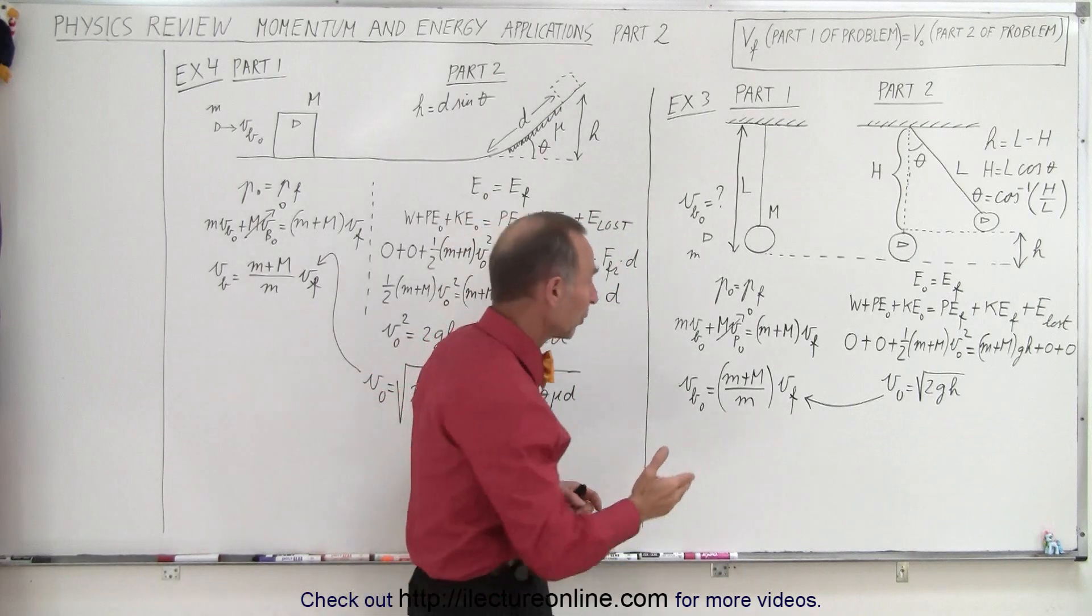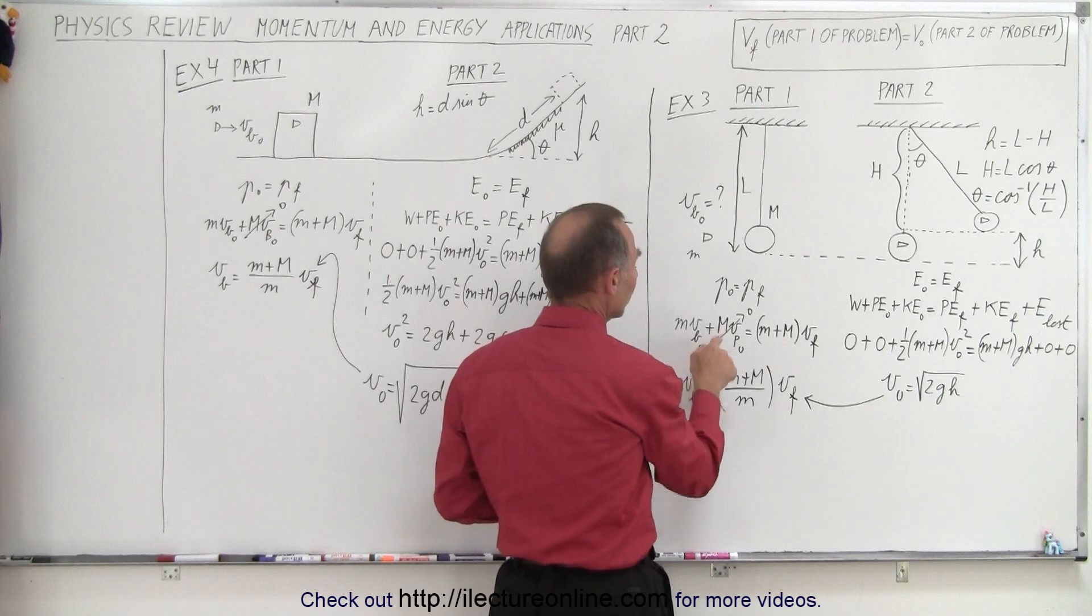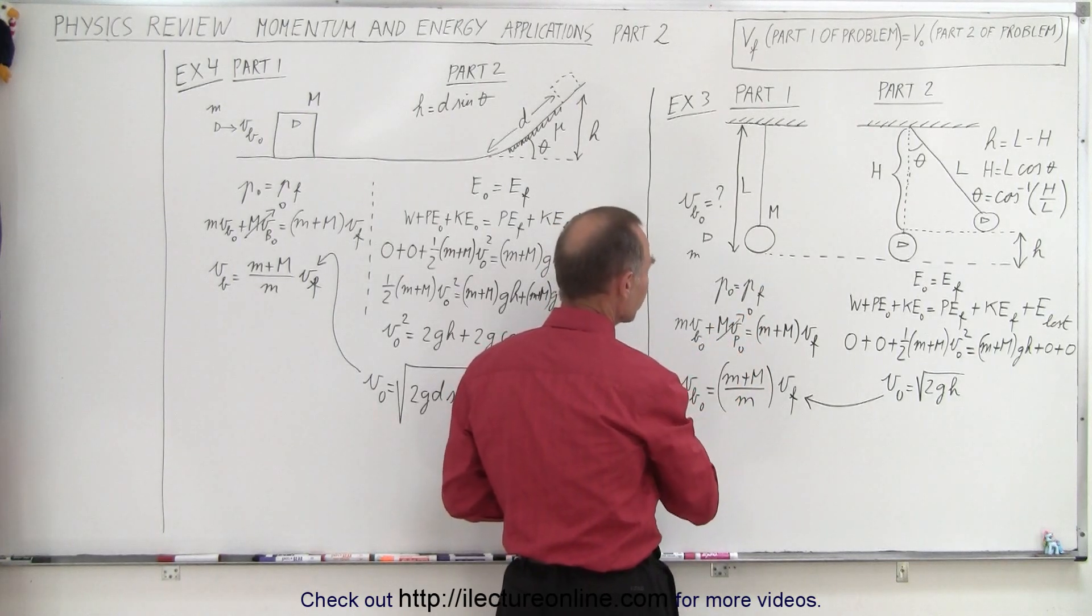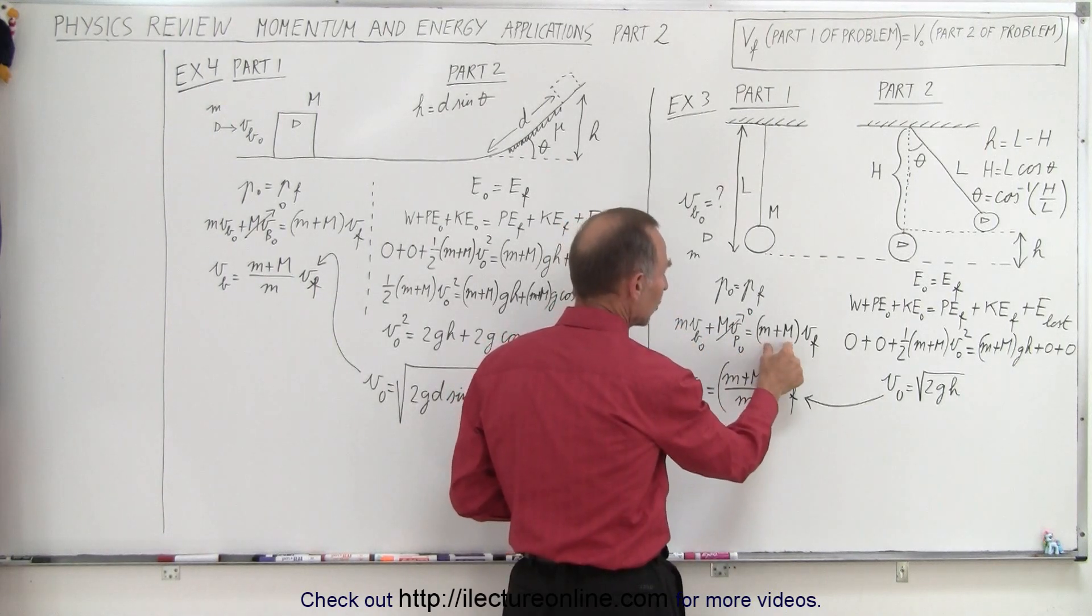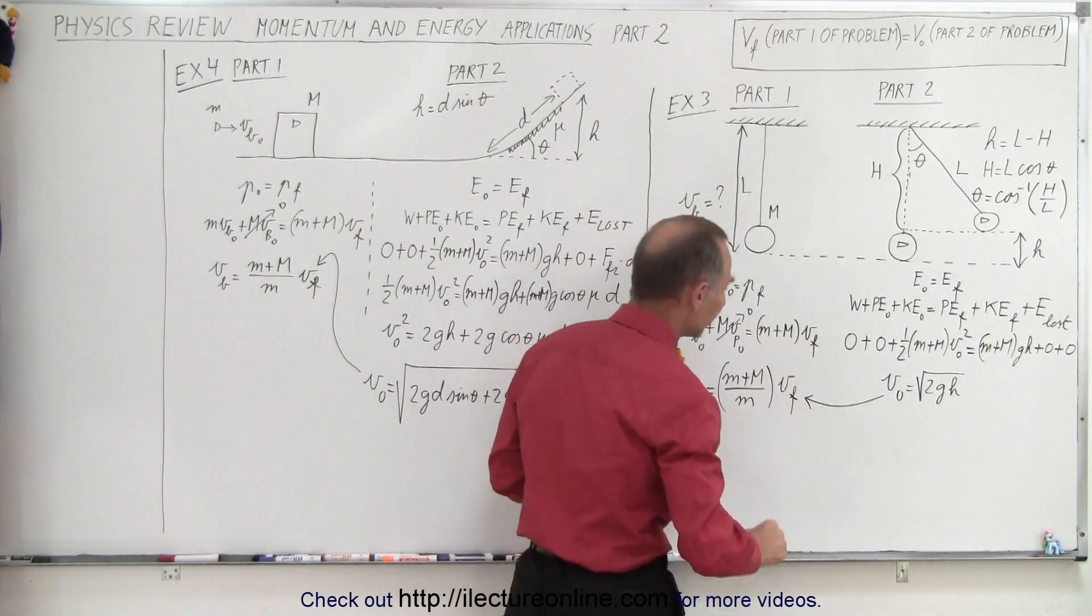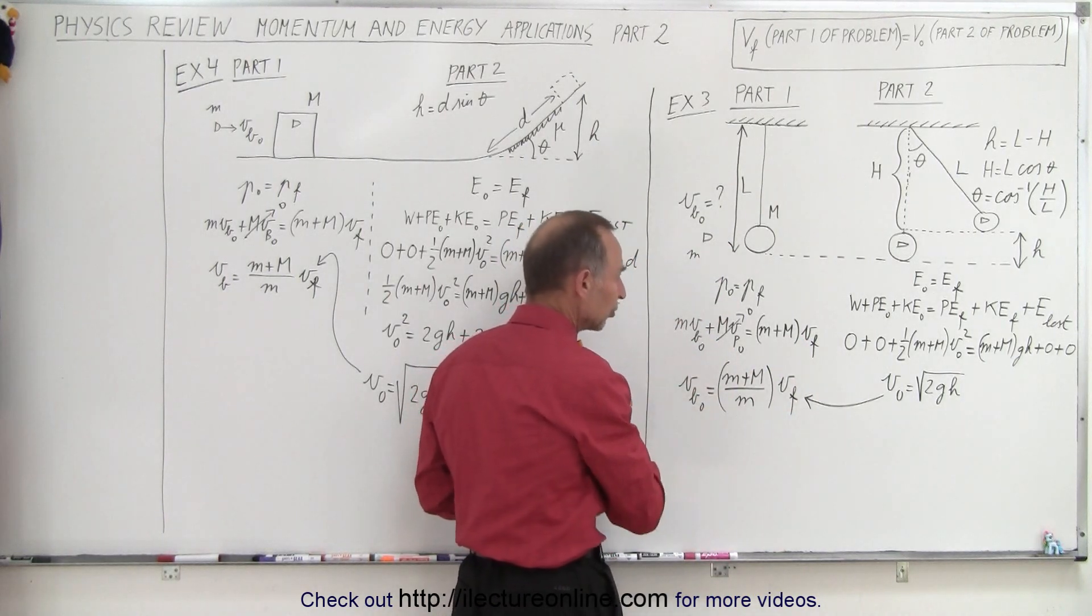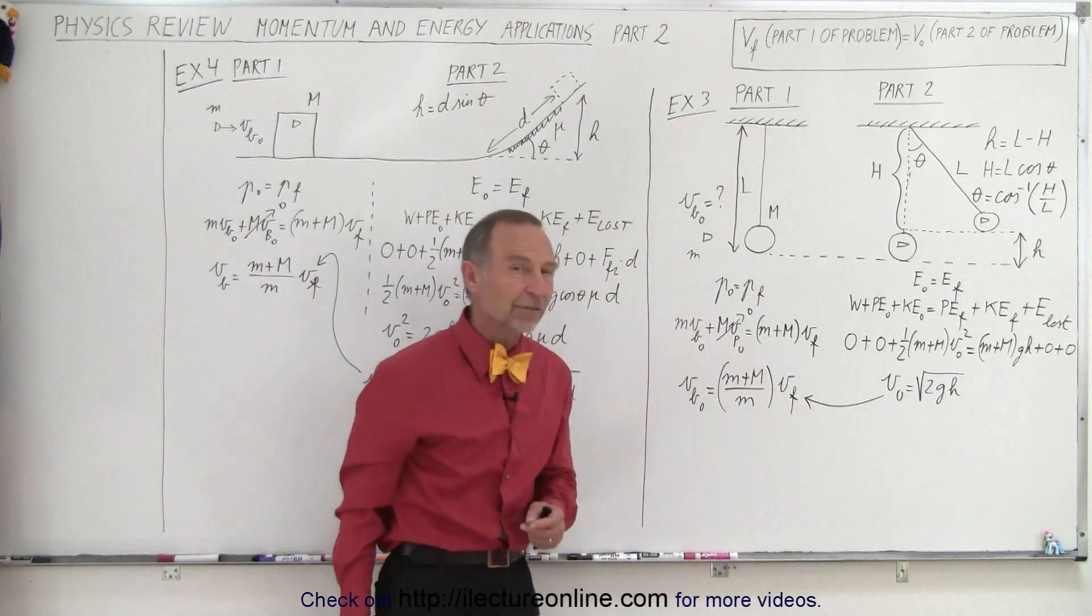For the first part, we have the equation that tells us the momentum is conserved. Notice that if the pendulum was not moving, the momentum of the pendulum initial was zero. We have the mass times the velocity of the bullet initially equals the sum of the two masses combined times the final velocity. If we solve this equation for the velocity of the bullet initial, then you can see that's equal to this, but we don't know the final velocity.